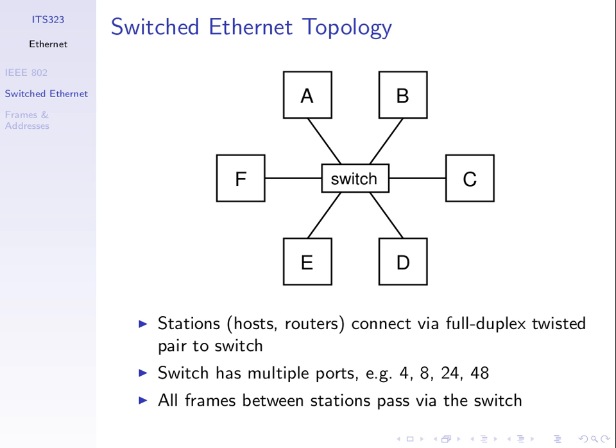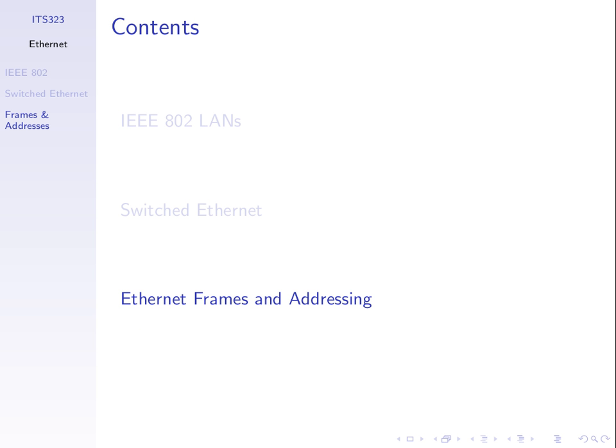We need to talk a little bit about what frames look like, and the magic that the switch does to send it on to D. Let's look at the structure of the frames we send using Ethernet, and importantly, the addresses that we use.